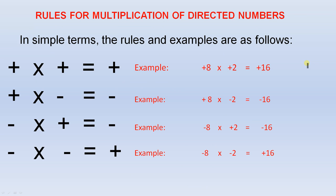Rules for multiplication of directed numbers. In simple terms, the rules and examples are as follows. If you multiply a positive number by a positive number, your answer is positive. And here is your example.